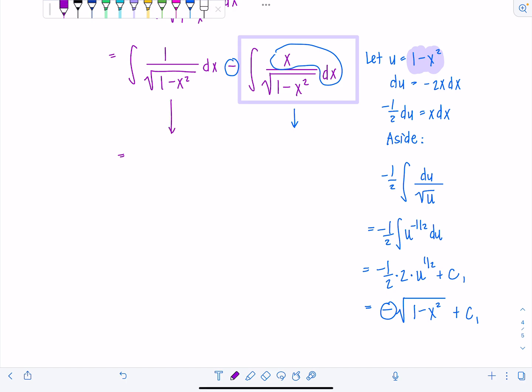So first one, that's just sine inverse of x. And then this is going to be positive radical one minus x squared plus c. And we're done.